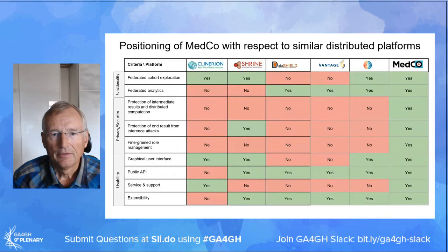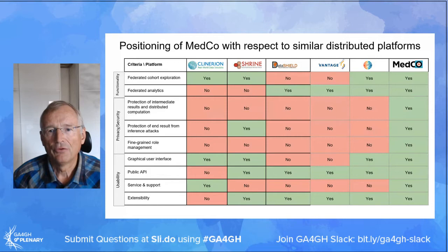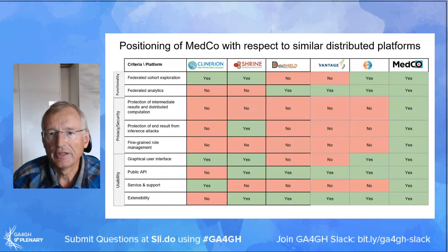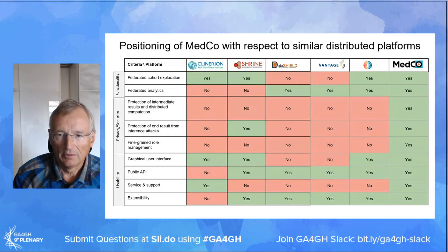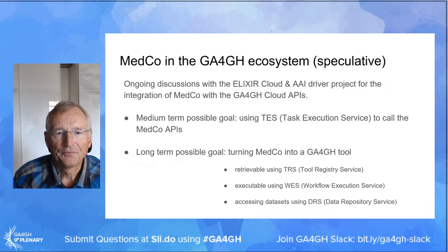We also studied the positioning of what we've done with respect to similar distributed platforms. Those most known to this audience are probably Shrine, DataShield from the UK, and Vantage6 from the Netherlands and Germany, evaluated across usability, privacy, security, and functionality criteria. MedCo, being a more recent tool, checks all the boxes.